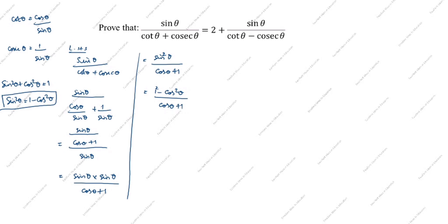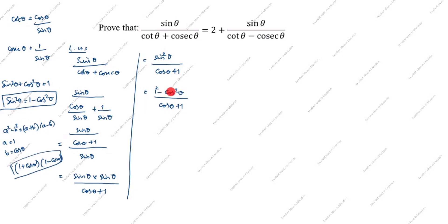Now, 1 minus cos²θ is in the format a² minus b², where a is 1 and b is cos θ. The formula is (a + b)(a − b). So we split: (1 + cos θ)(1 − cos θ) divided by (1 + cos θ). The (1 + cos θ) cancels. So the answer is 1 minus cos θ. This is LHS.